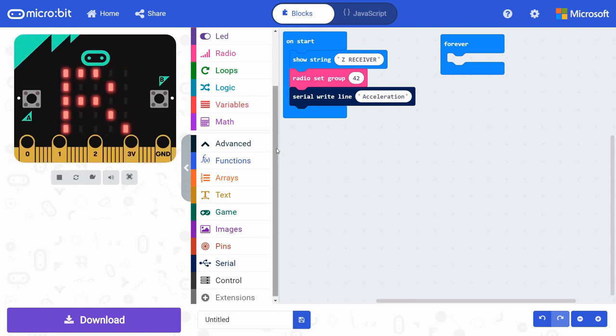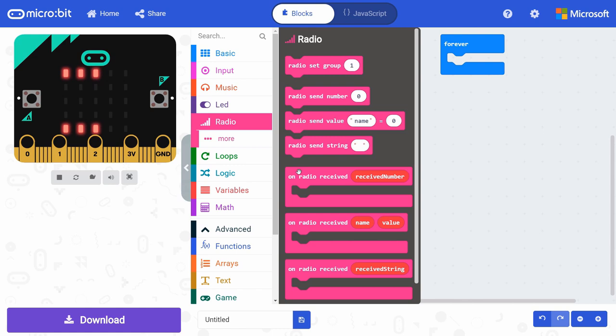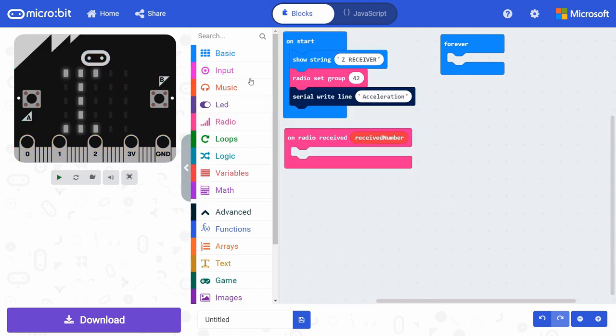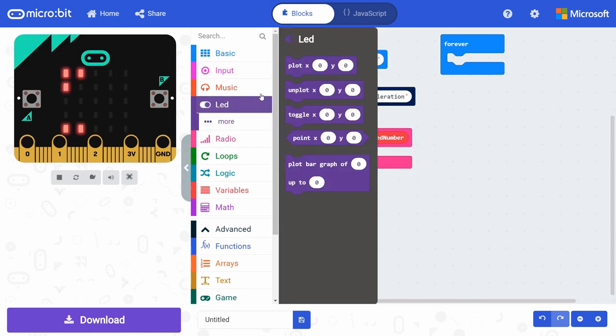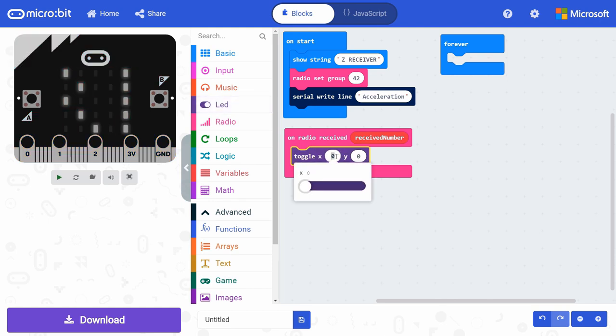In radio, get an on radio received block and put it in the workspace. In LED, grab a toggle block and put it in on radio received. Change the x and y to 4 and 4. This will make the bottom right LED flash whenever you're receiving data, which can help troubleshoot connection problems between the two micro bits.